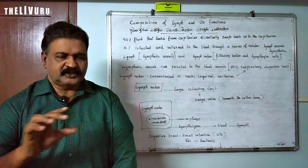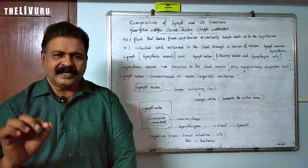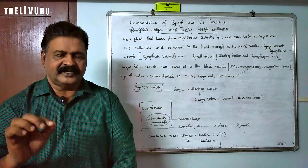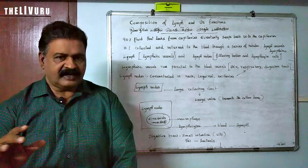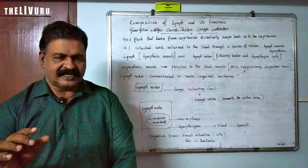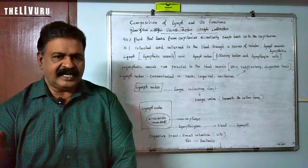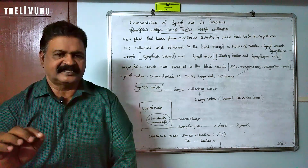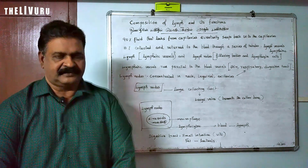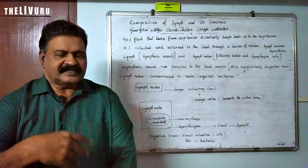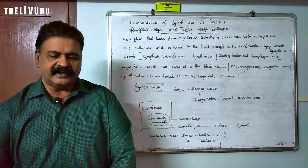The wall of the capillaries is very delicate and it consists of only endothelial cells. These endothelial cells form the upper layer of the capillary wall.